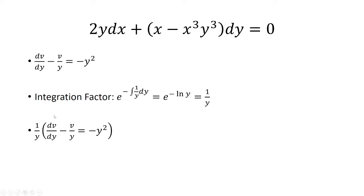Now we're going to multiply both sides by 1 over y. Distribute, and get 1 over y dv over dy minus v over y squared is equal to negative y.